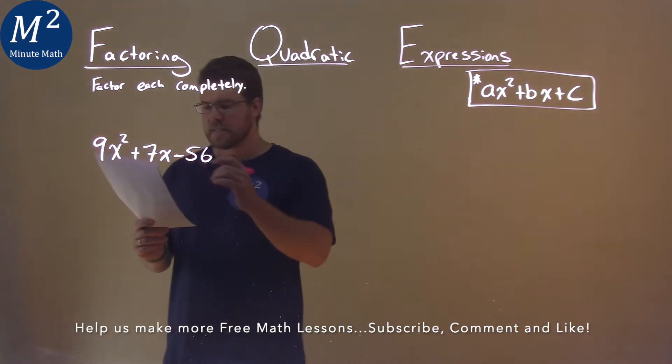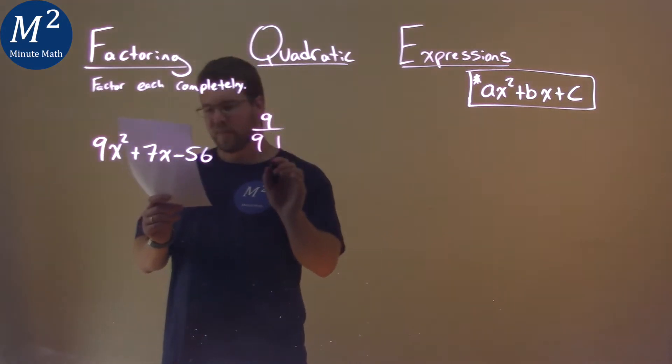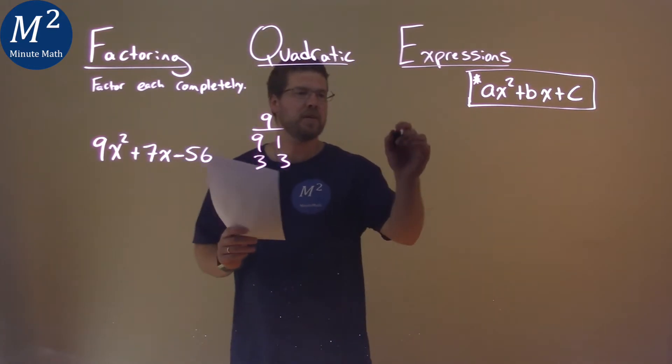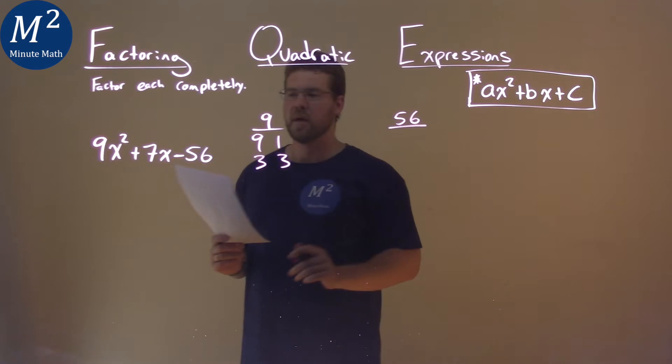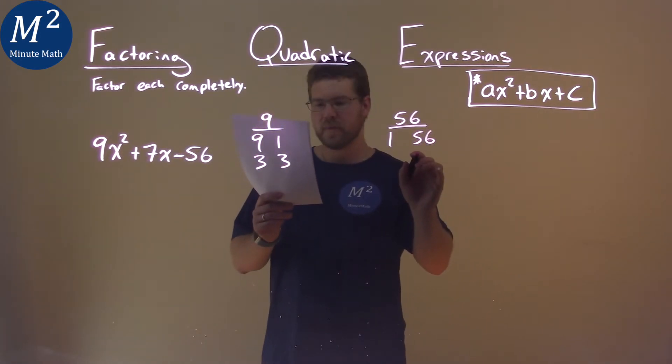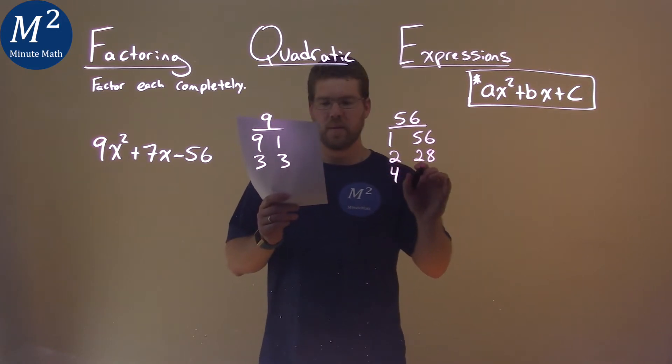My a value is 9, so we know 9 breaks down to be a 9 times a 1, or a 3 times a 3. And our c value, 56, can be a 1 times a 56, 2 times a 28, 4 times a 14, or 7 times an 8.